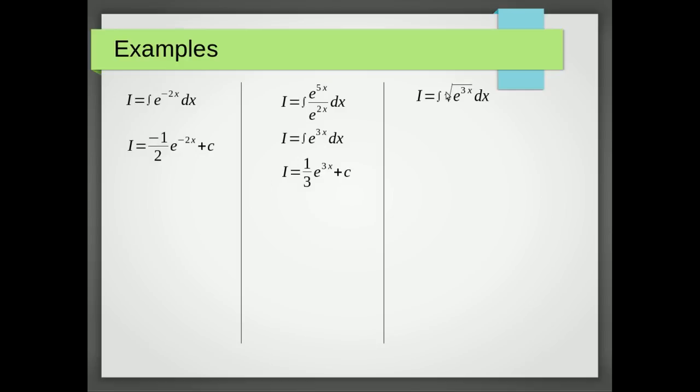Now for our last example we've got this square root which basically means everything there is to the power of a half so we end up with e to the 3 over 2x dx. So we're going to get the e to the 3 over 2x plus c but we've got to multiply by the reciprocal of 3 over 2 which is 2 over 3 so we get 2 over 3 and e to the 3 over 2x plus c.